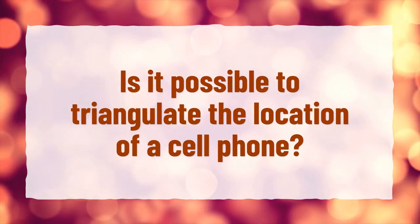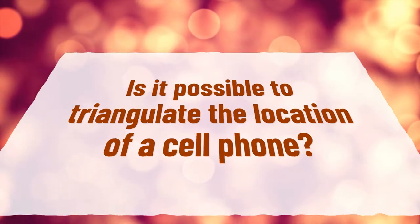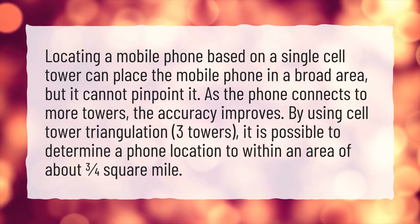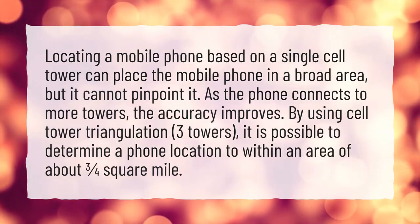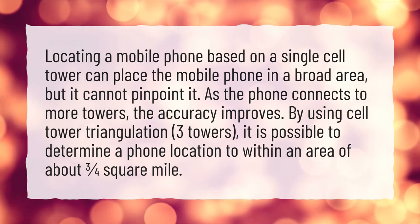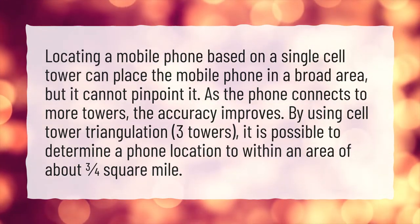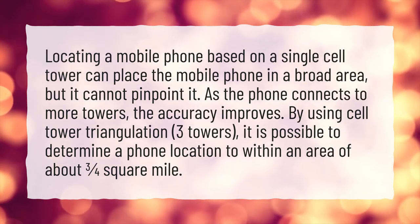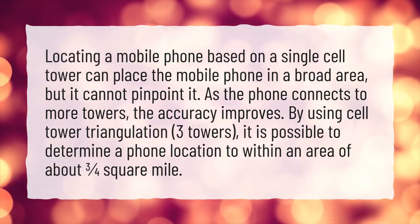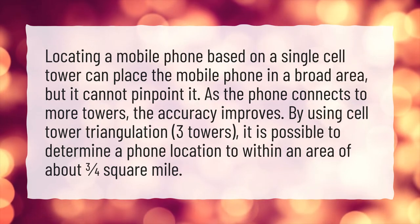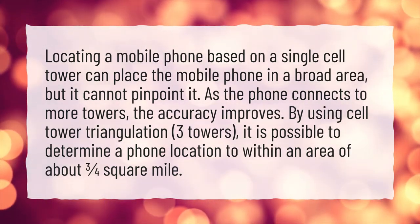Is it possible to triangulate the location of a cell phone? Locating a mobile phone based on a single cell tower can place the mobile phone in a broad area, but it cannot pinpoint it. As the phone connects to more towers, the accuracy improves. By using cell tower triangulation with three towers, it is possible to determine a phone location to within an area of about three quarters of a square mile.